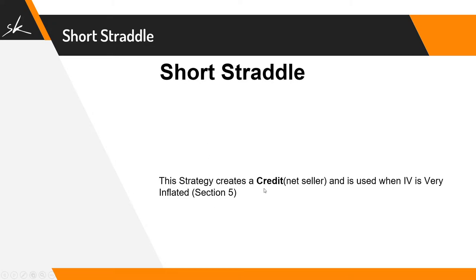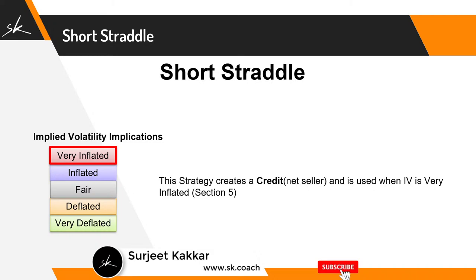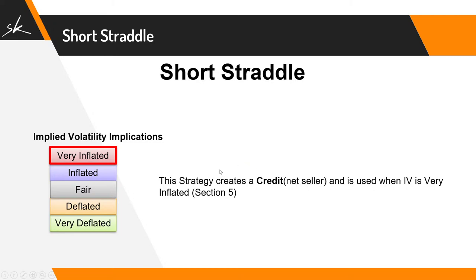Short straddle is a strategy that creates a net credit for the seller and is used when IV is very inflated — meaning IV is in section five. The volatility implication is that whenever you are applying a short straddle, we ideally want implied volatility to be in section five. Even if it is in section four it's acceptable, but ideally we would like it to be in section five because we are selling options and we want to sell when they are very inflated.